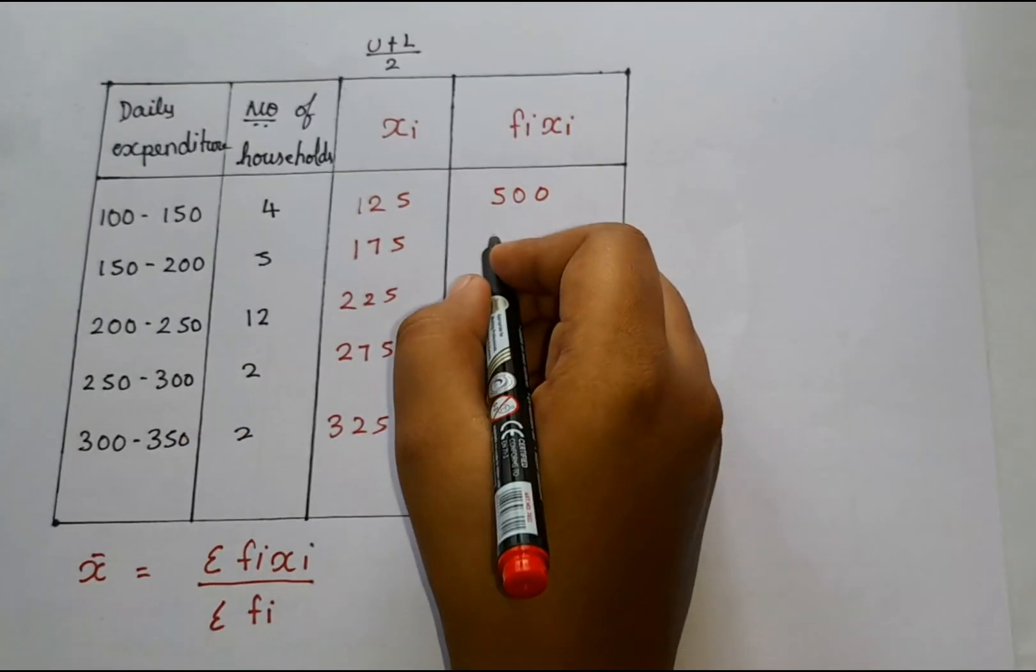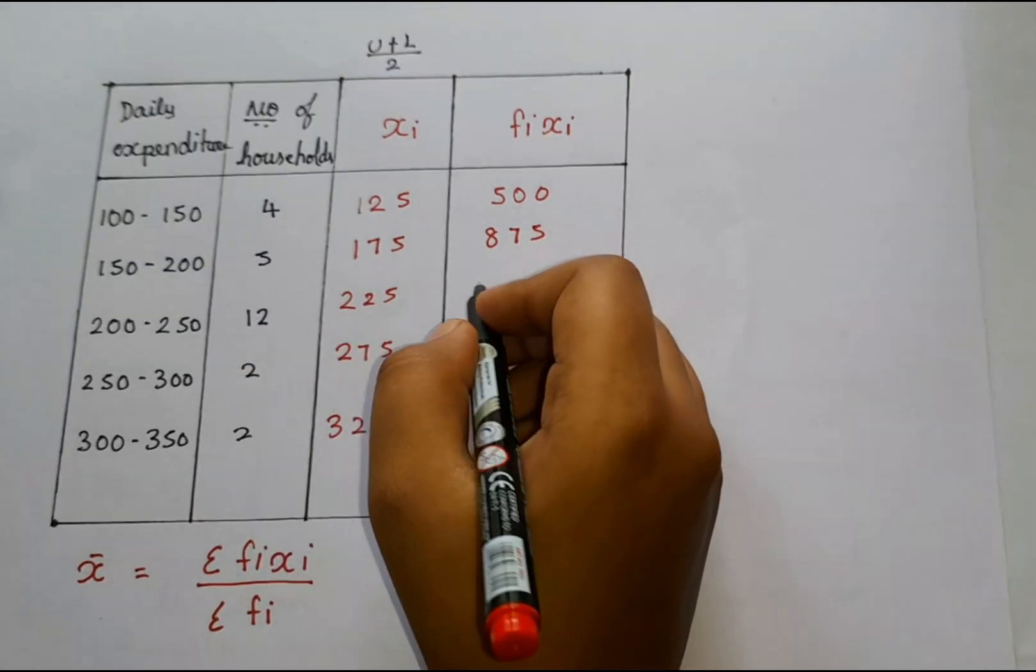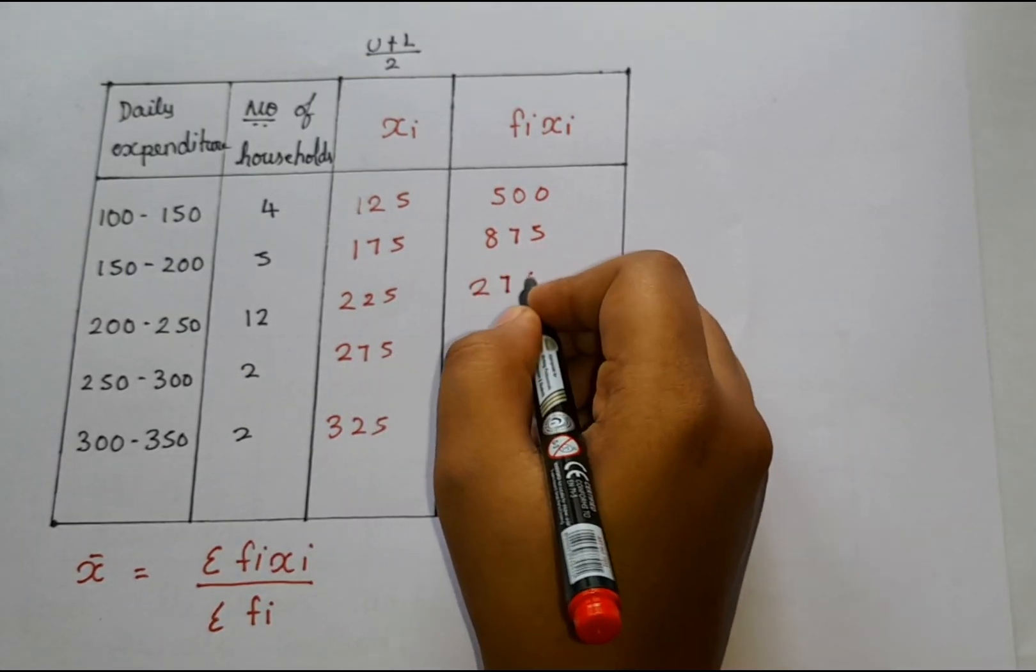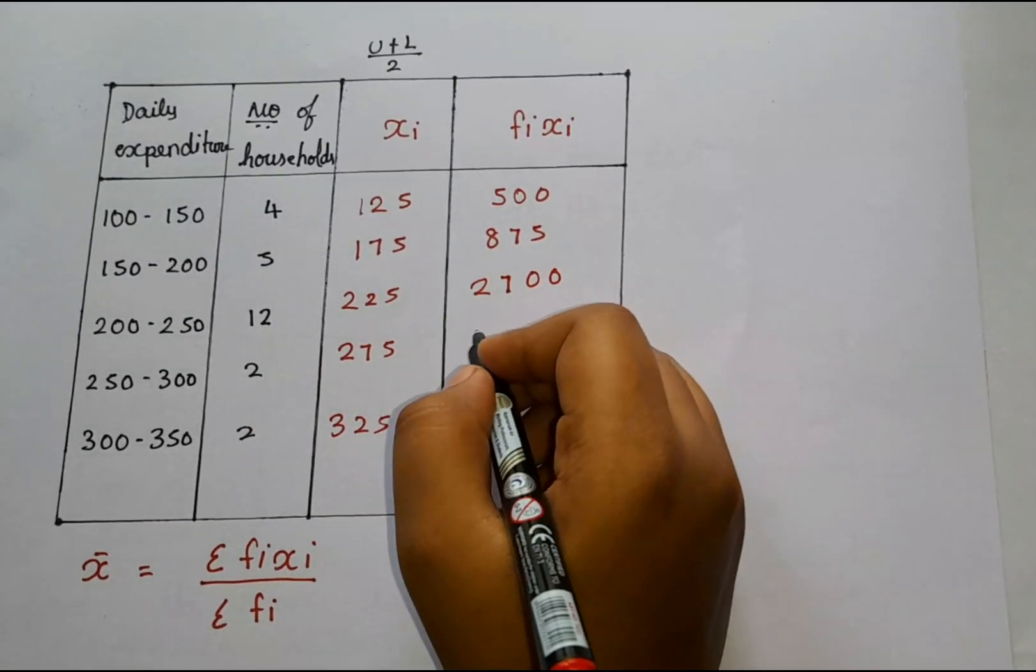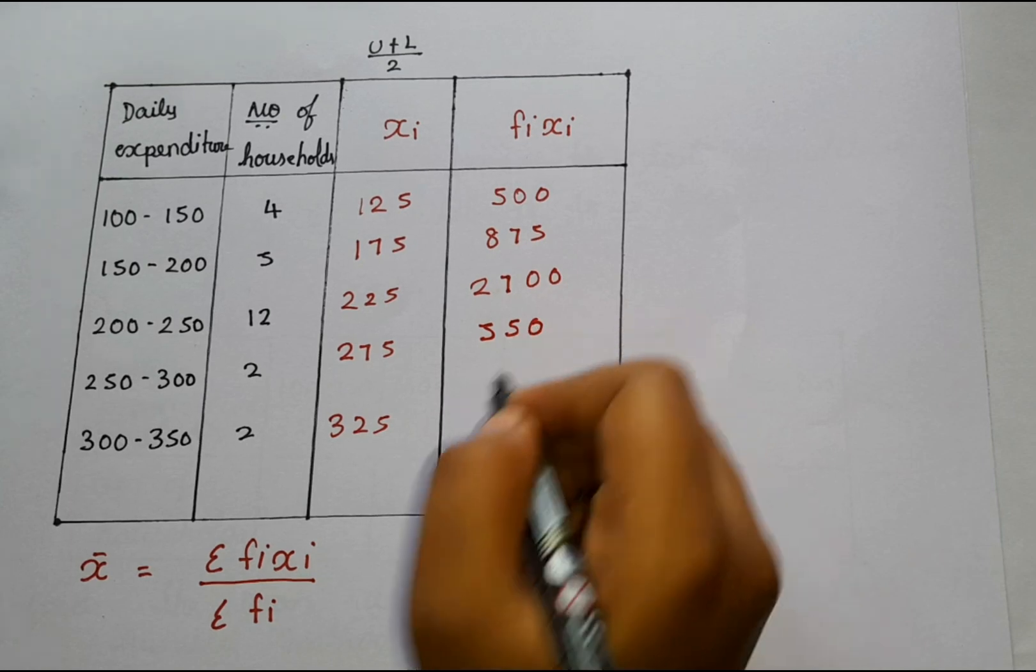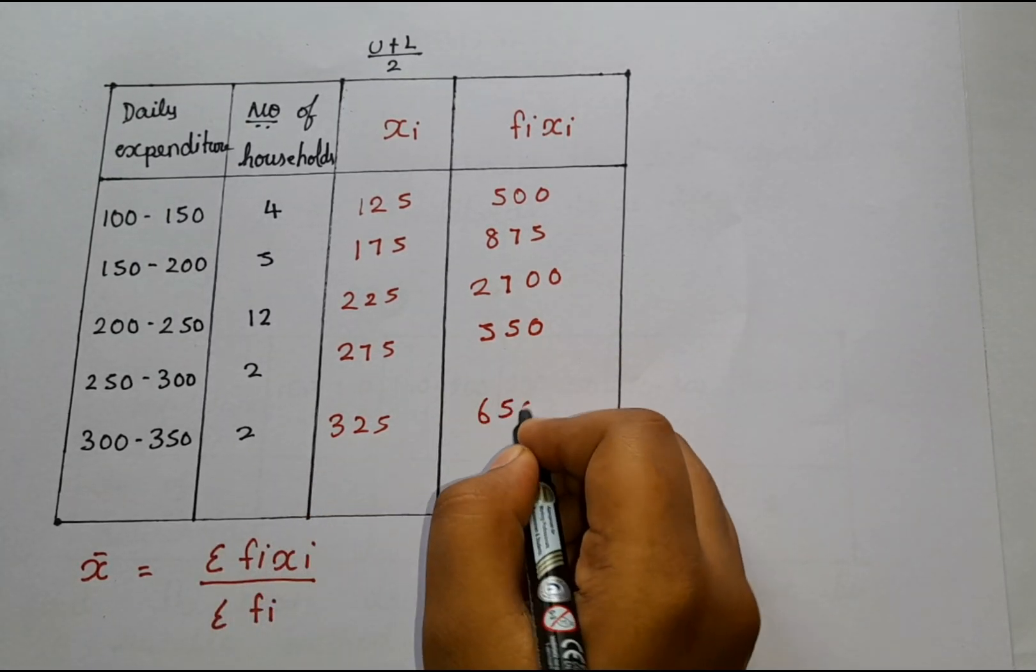So 5 into 175 is 875. 12 into 225 is 2700. And 2 into 275 is 550. And 2 into 325 is 650.